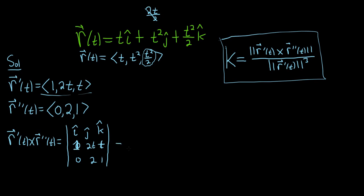Alright, the formula is plus minus plus. So first it's i hat. And then we cross out the first row and first column. And we're left with 2t, t, 2, 1. Then it's minus j hat. Then we cross out the first row and second column. And we're left with 1, 0, t, 1. And last but not least, we cross out the first row, third column. So it's plus k hat. And it's 1, 2t, 0, 2.